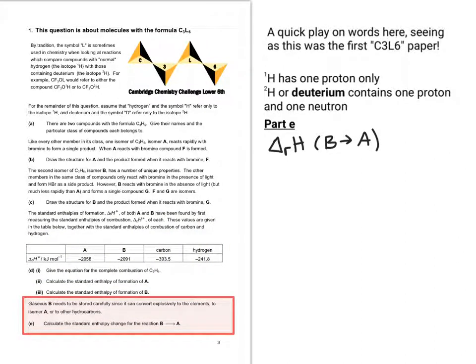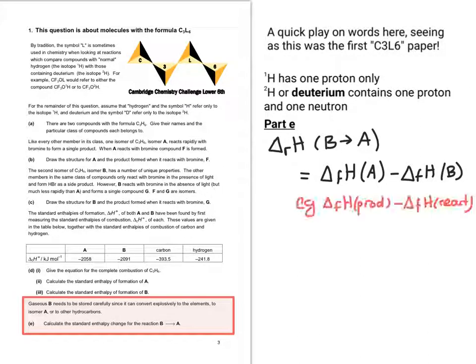So the final part on this page, it says gaseous B needs to be stored carefully since it can convert explosively to the elements, to isomer A or to other hydrocarbons. And they want you to calculate the standard enthalpy change for the reaction B to A. So this can be worked out by the difference between the two enthalpies. It's important to get them the right way round. So if you're going from B to A, it's the formation enthalpy of A minus the formation enthalpy of B. So the logic behind this is it's the simple equation of the enthalpy of formation of the products take away the enthalpy of formation of the reactants. Which gives us minus 33 kilojoules per mole.